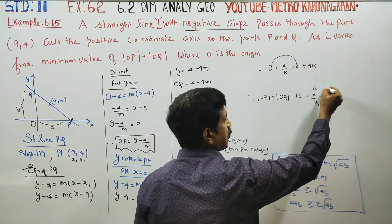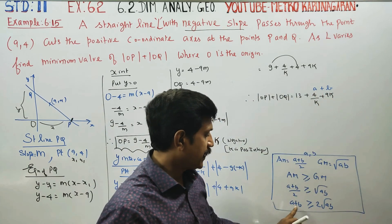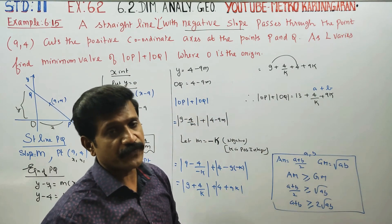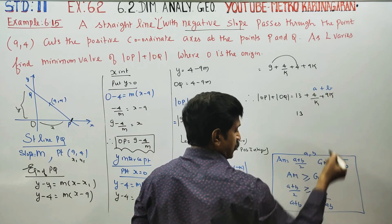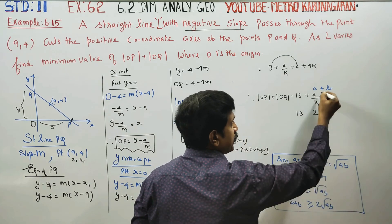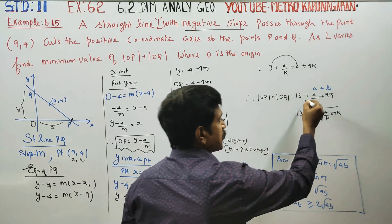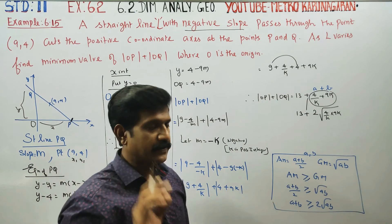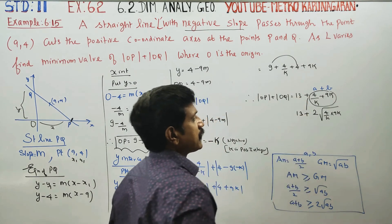Using this concept in the problem, let a = 4/k and b = 9k. Applying the AM-GM inequality: a + b ≥ 2√(ab), so 4/k + 9k ≥ 2√(4/k · 9k). Therefore |OP| + |OQ| = 13 + (4/k + 9k) ≥ 13 plus 2√(ab).